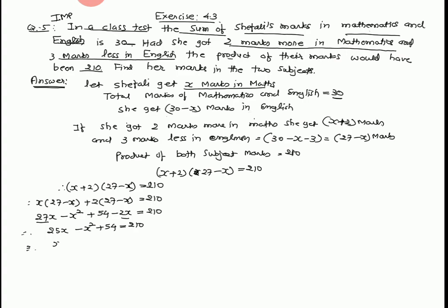27 minus 2x, 25x minus x squared plus 54 equal to 210. Therefore x squared minus 25x plus 210 minus 54 equal to 0. x squared minus 25x plus 156 equal to 0.